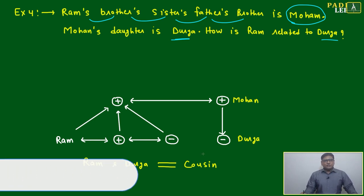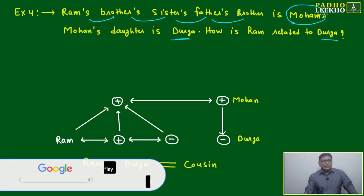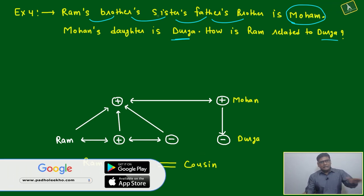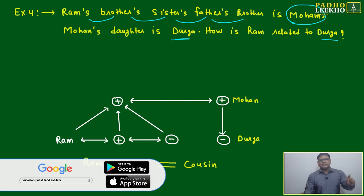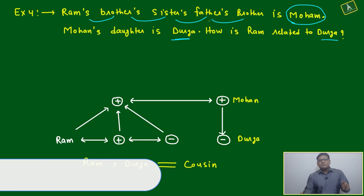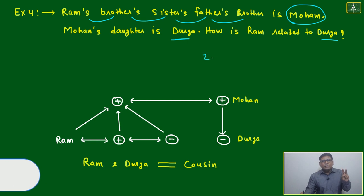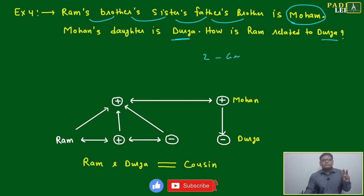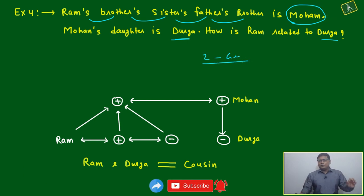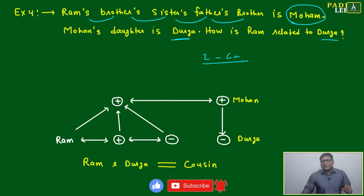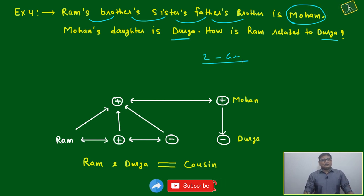One thing we understood: Ram's brother — same generation. Again sister — same generation. Father — next generation. Father's brother — same generation. Means they are dealing with only two generations. This is giving one of those 'aha' moments. We are not going to make a very complicated tree diagram or family tree — only two generations.